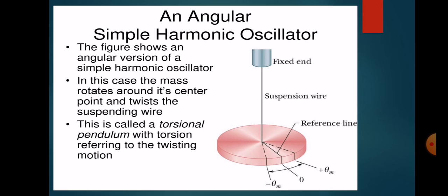The torque is always rotating — it rotates from plus theta_m to minus theta_m, and then from minus theta_m back to plus theta_m. The mean position is zero. In this case, the mass rotates around its center point and twists the suspending wire. During this rotation, the suspending wire gets twisted in one direction, and then when it rotates from minus theta_m to plus theta_m, the wire gets twisted in the other direction.